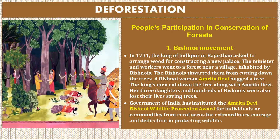People's participation in conservation of forests: The first notable event is the Bishnoi movement. In 1731, the king of Jodhpur in Rajasthan sent workers to a forest near a Bishnoi village to arrange wood for constructing a new palace. The Bishnois thwarted them from cutting trees. A Bishnoi woman named Amrita Devi hugged a tree, but the king's men cut down the tree along with Amrita Devi. Her three daughters and hundreds of Bishnois also lost their lives saving trees. The Government of India has instituted the Amrita Devi Bishnoi Wildlife Protection Award for individuals or communities from rural areas showing extraordinary courage in protecting wildlife.